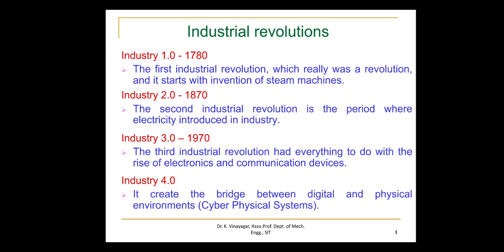Industry 2.0. In the 1870s, also called the Second Industrial Revolution, electricity was introduced in the industries. Manufacturing with the help of electricity led to mass production and extended to automation. Electrical drives, machines, conveyor belts, and assembly lines were introduced in that period.